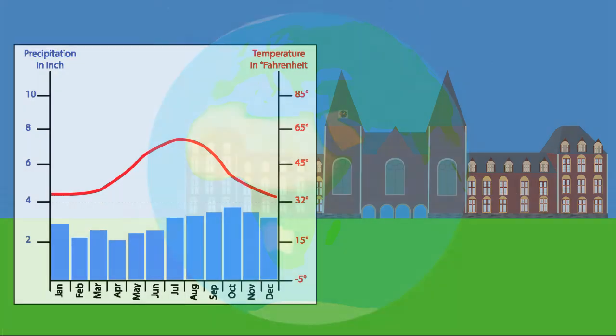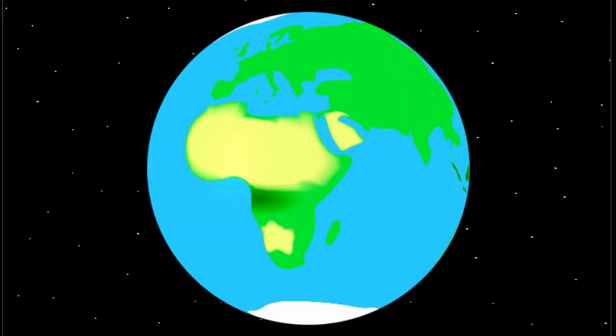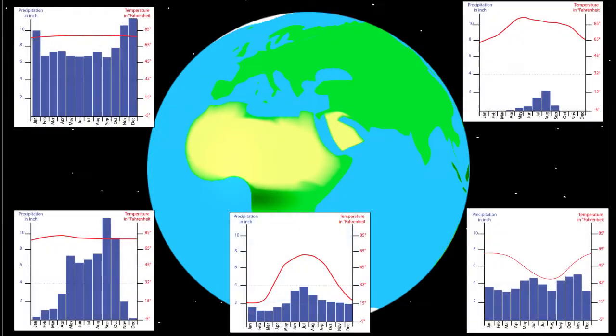By analyzing a climate graph, we can easily guess where this place is located in the world. First, we look at the warm period. When this warm period is in December and January, then the place will be in the Southern Hemisphere. When the warm period is in July and August, the place will be located in the Northern Hemisphere.